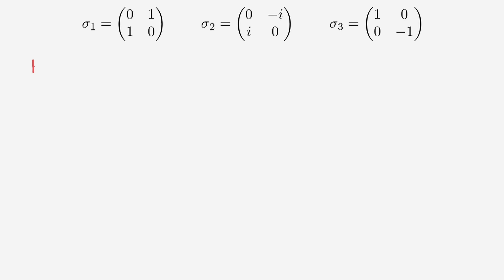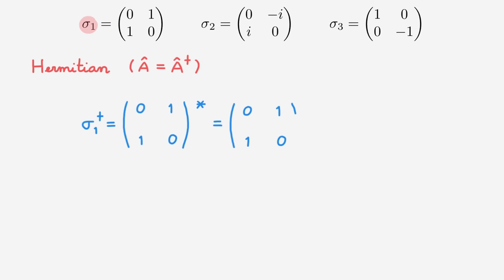The Pauli matrices are hermitian, and remember that an operator or matrix A is hermitian if it is equal to its adjoint. So let's confirm this explicitly by starting with the sigma 1 matrix. The adjoint of a matrix is defined as the complex conjugate of the transpose. In this case the transpose is trivially the same, and as the entries of sigma 1 are real, the matrix is unchanged. The final result is the matrix 0, 1, 1, 0, which is indeed equal to sigma 1.